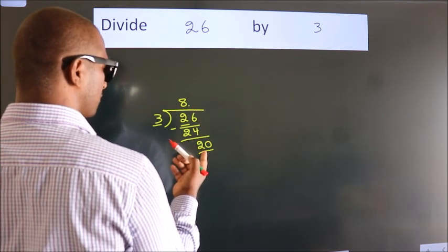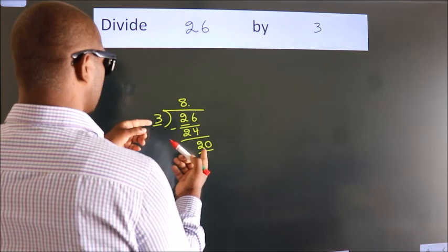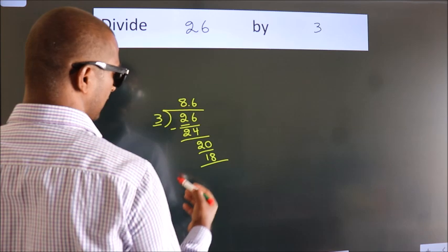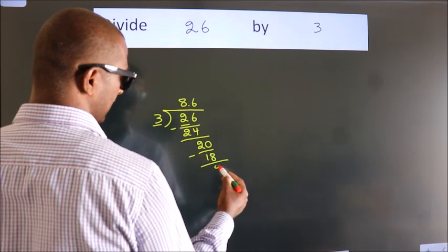A number close to 20 in 3 table is 3 times 6 equals 18. Now we subtract.